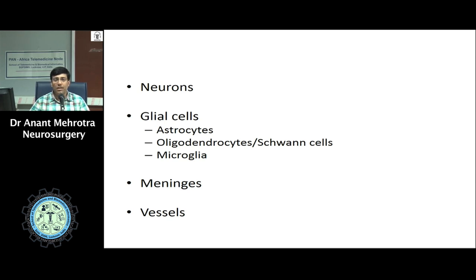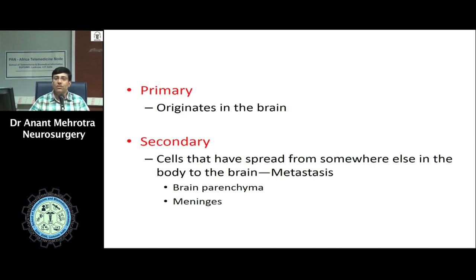Apart from astrocytes, oligodendrocytes, and microglial cells, we also have ependymal cells, which line the ventricle of the brain. The tumors which arise from the glial cells are known as gliomas. These can be subdivided: tumors arising from astrocytes are astrocytomas, from oligodendrocytes are oligodendrocytomas, from Schwann cells are schwannomas, and from ependymal cells are ependymomas.